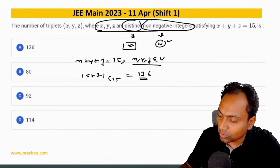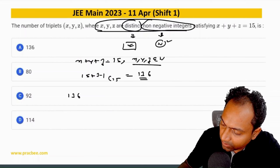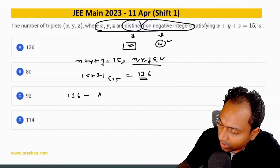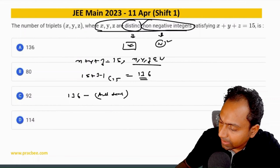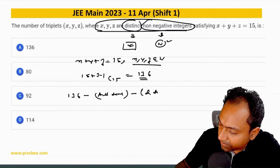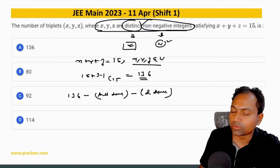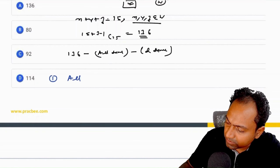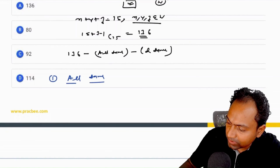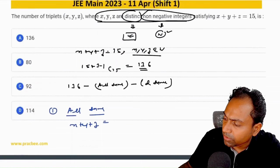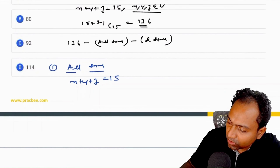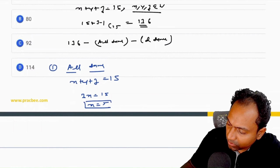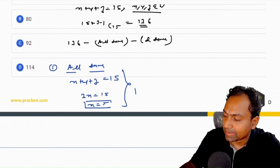Out of these 136 total solutions, we need to subtract those where two are the same or all three are the same. Finding all-same is simple: put x = y = z, so 3x = 15, giving x = 5. There is only one such solution.